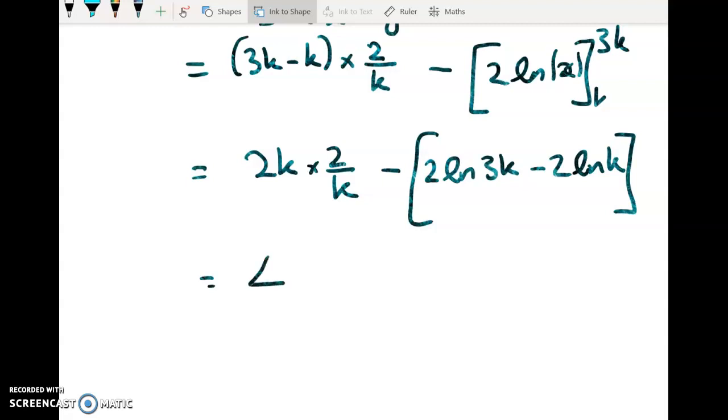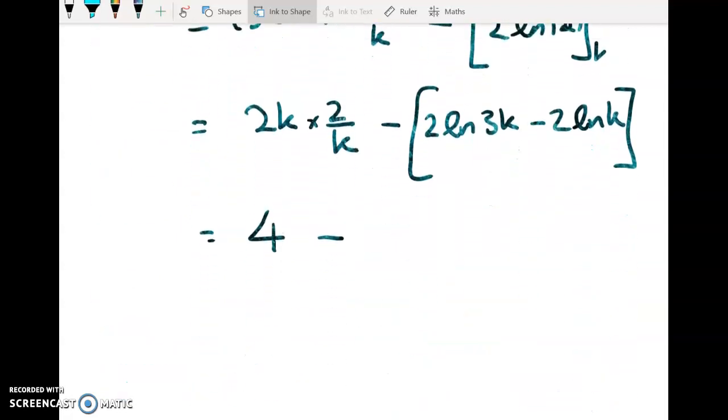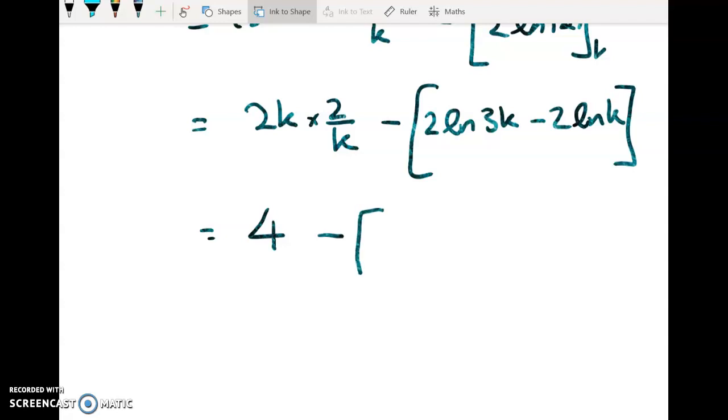So I'm cleaning this up. I get 4 minus, now let's just go back and look at what we're trying to get to. Well, we want to write it in the form of a plus b log of c. So let's just deal with these squared things.